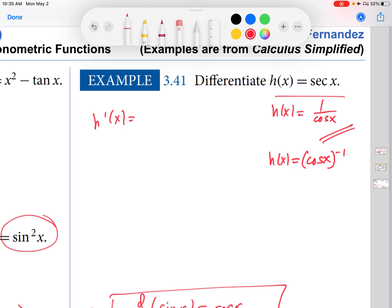It's a little faster. So the derivative in this case by the chain rule would be you bring down the minus 1, evaluate it at cosine x, and then to the minus 2.